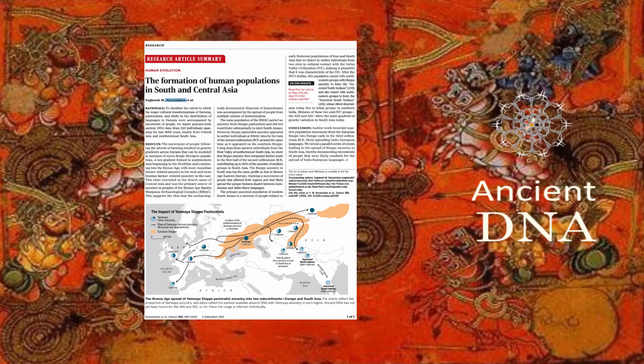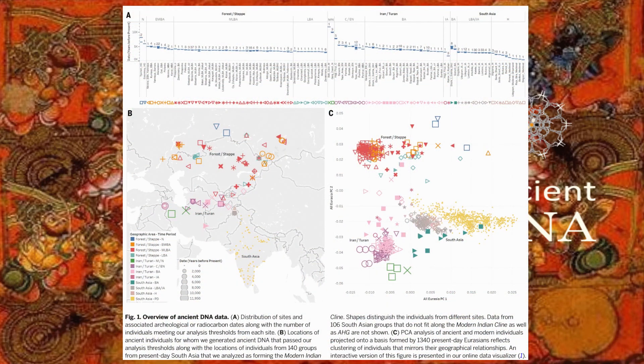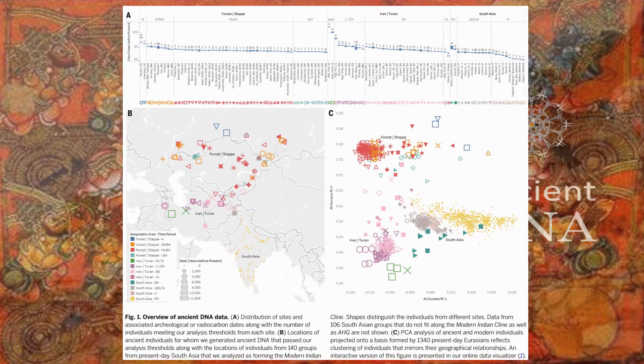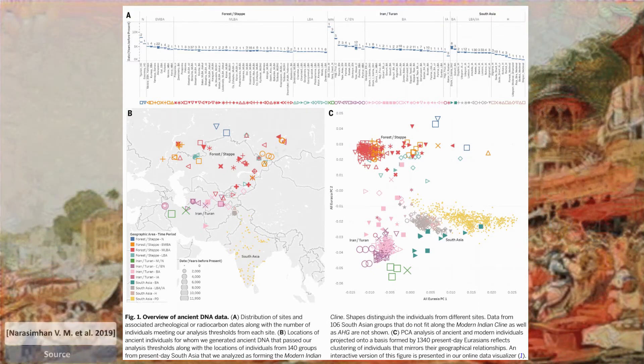They have sequenced genome-wide data from 523 individuals from Central Asia and northernmost South Asia from the Mesolithic period onward, which they then co-analyze with previously published ancient DNA from across Eurasia and with data from diverse present-day populations. They have no ancient DNA samples from India itself. One reason for this might be that DNA degrades fast in hot, humid climate.